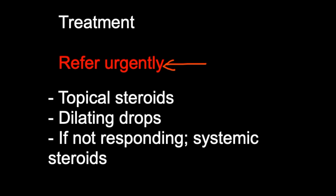Treatment takes several days or in some cases several weeks to work. If this is failing, you can consider injections of steroid medicines just under the outer tissue of the eye. Occasionally, if the anterior uveitis is very severe, you can think of systemic steroids or systemic prednisolone.